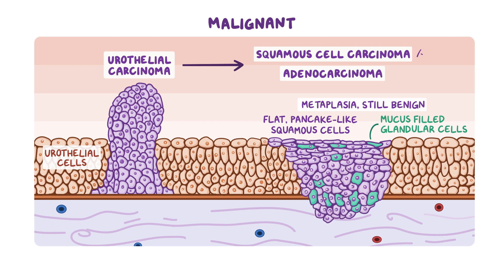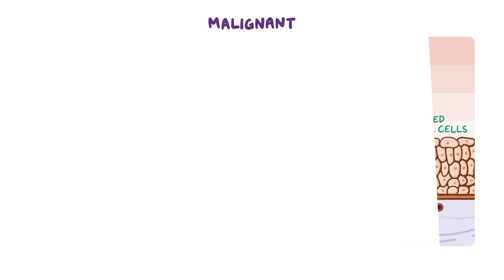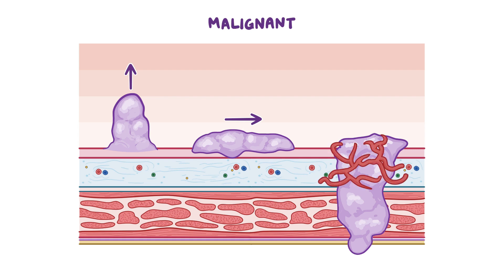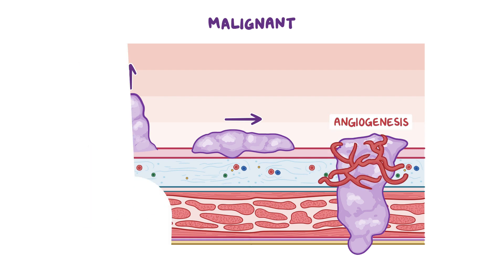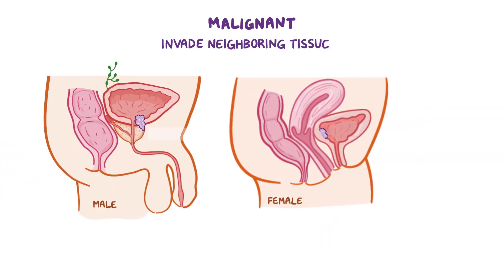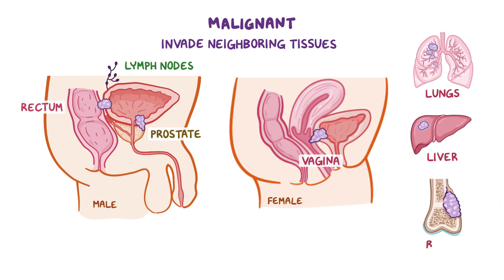When metaplastic cells start growing out of control, it becomes squamous cell carcinoma or adenocarcinoma. Malignant tumors may start as papillary outgrowths from the bladder mucosa and sometimes grow horizontally. As the tumor progresses, it penetrates deeper into the bladder wall, new blood vessels develop via angiogenesis, and eventually cancerous cells invade neighboring tissues like the prostate, rectum, and vagina, spreading to nearby lymph nodes or metastasizing to organs such as the lungs, liver, and bones.